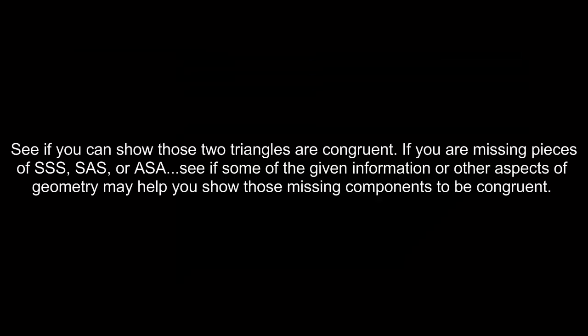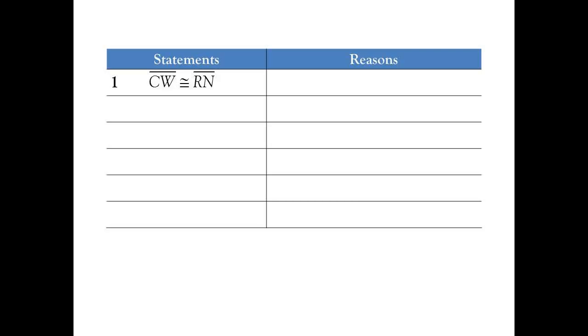See if you can show those two triangles congruent. If you are missing pieces of SSS, SAS, or ASA, see if some of the given information or other aspects of geometry may help you figure that out. So let's jump into writing down some of these ideas. We know that CW is congruent to RN, and the reason is because it's part of the given information. We know that RC is congruent to WN, and the reason for that is also that it is given.